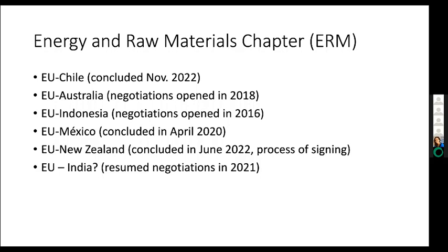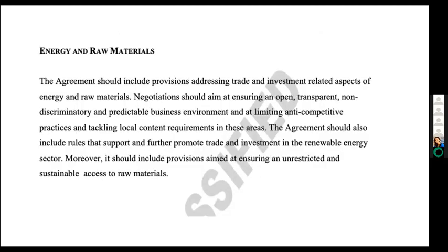EU-New Zealand can go quite quickly so we do have to pay attention to that treaty now. EU-India is a big question mark — whether it's going to include the energy and raw materials chapter or not. Apparently from the EU side they are pushing to include it but India is being a bit more hesitant. I'm going to concentrate on EU-Chile because it's the most exemplary agreement — it's the most elaborated one and includes a lot more obligations and restrictions. It's interesting to note that Australia and New Zealand have somewhat less restrictive energy and raw materials chapters than the ones being negotiated with Chile, Mexico, and others.